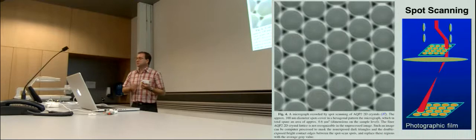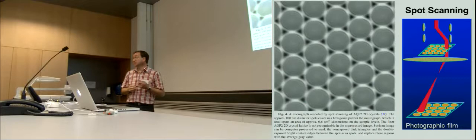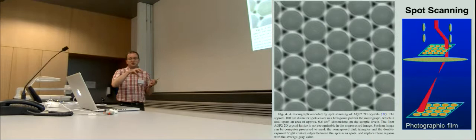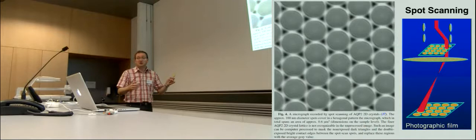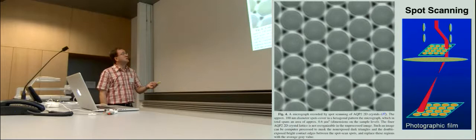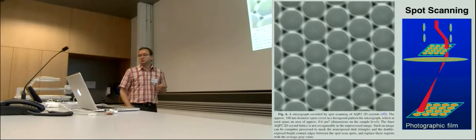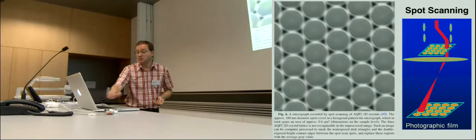Now, one possibility to avoid the drift and the charging could also be to use spot scanning. This is a method also developed by Ken Downing. And it is the scanning of the 2D crystals with little areas. You would only take pictures of 100 nanometers in diameter and assemble them. So it's easy on a photographic film. You would assemble them and produce such an image. This is also from the review of Ken Downing, where he describes the spot scanning on aquaporin crystals. And it would help to reduce the drift because you illuminate only a fraction of your crystal at a time.